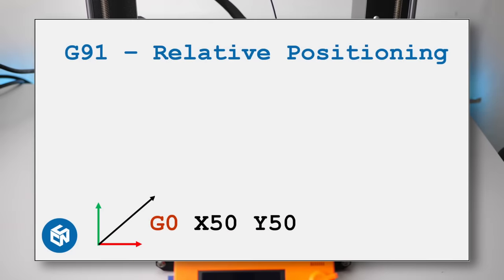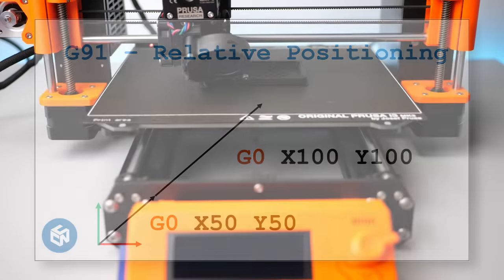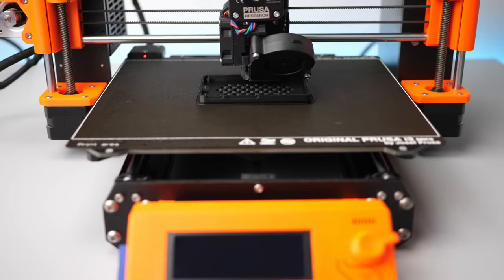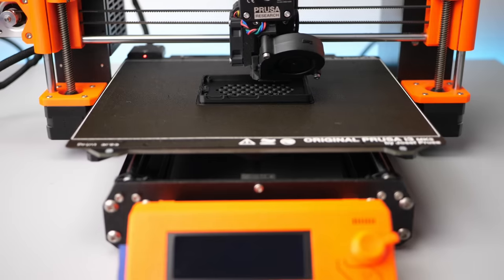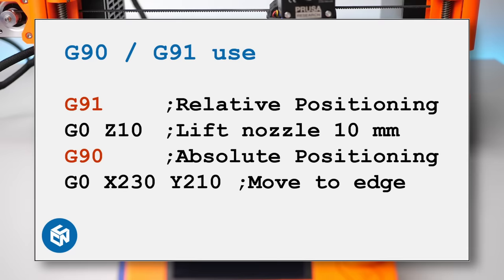If G91 is set, all movements are relative to the last position. So if we start at the origin X0 Y0 and send G0 X50 Y50, we will move to X50 Y50. If we then send G0 X100 Y100, it will perform an incremental move and end up at X150 Y150. Most movements in your G-code file will be in absolute positioning. Where relative positioning is useful is, for example, in your end G-code where you want to lift the nozzle from the print. So regardless of your model height, G91 then G0 Z10 will always lift the printhead by 10mm. Right after that, we switch back to absolute positioning with G90 and can move the nozzle to the edge of the print bed.